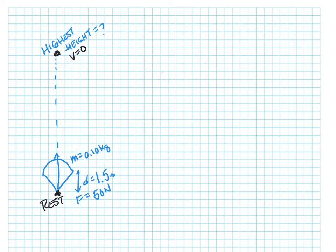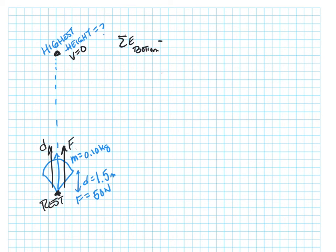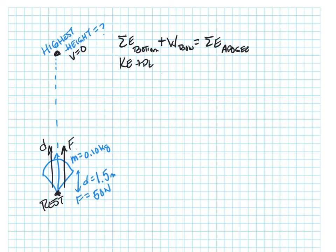Now let's figure out this problem. I need to sum up my energies just like I did before. The sum of the energy at the bottom is my starting energy, and then I either add or subtract work. I've got a force that's going up and a displacement that's also going up, so because the two go in the same direction, that's going to add energy to my arrow — plus the work of the bow. And that's going to equal the total energy at the highest point — the apogee, because apogee means the farthest away, which is when the arrow is farthest from the ground.